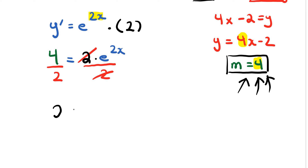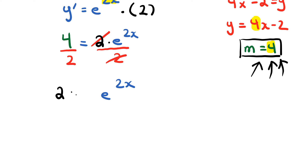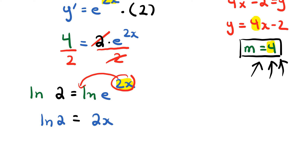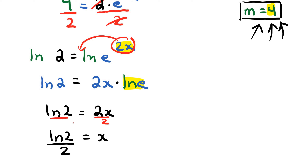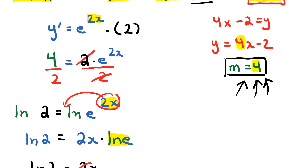I can divide both sides by 2, so 4 divided by 2 is 2, giving 2 equals e to the power of 2x. To solve for x trapped in the exponent, I take the natural log of both sides. So ln(2) equals 2x times ln(e). Since ln(e) equals 1, I just have 2x equals ln(2). Dividing both sides by 2, x equals ln(2) divided by 2.